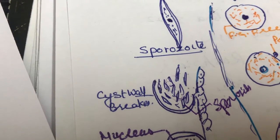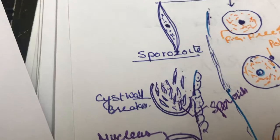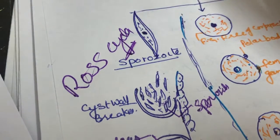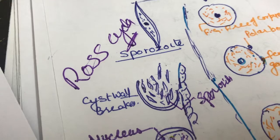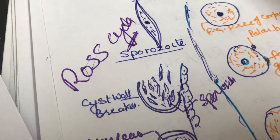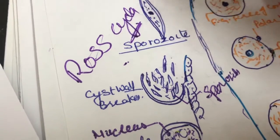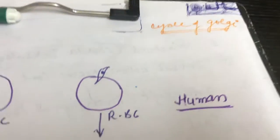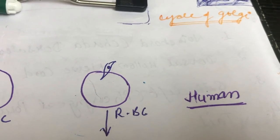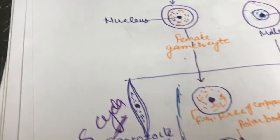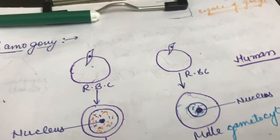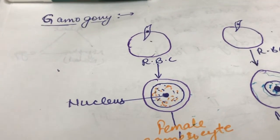This is sporogony, the cycle in a mosquito. That is also called the Ross cycle, R-O-double-S, Ross cycle. It is also called the cycle of Golgi by the inventor's name. So this is the life cycle of Plasmodium.